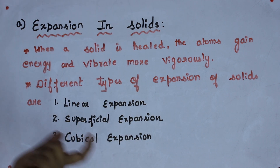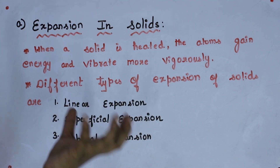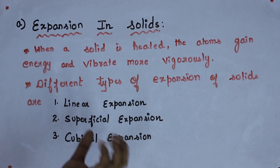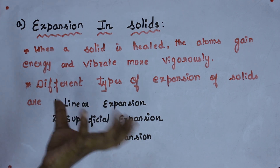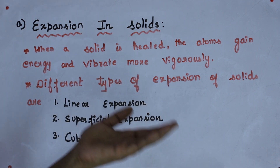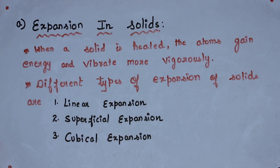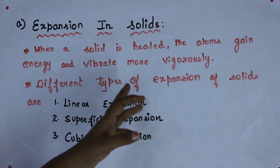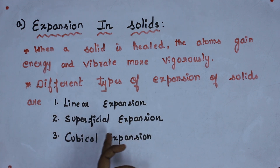When a solid substance is heated, the atoms in the substance will gain energy. When atoms start gaining energy, they will vibrate more vigorously, which leads to the expansion of the solid. There are different types of expansion in solids: linear expansion, superficial expansion, and cubical expansion.